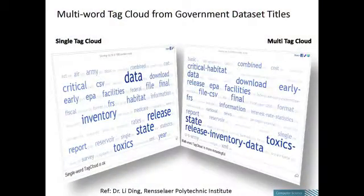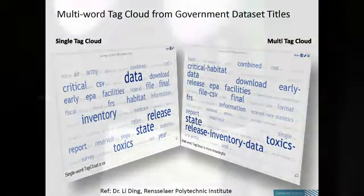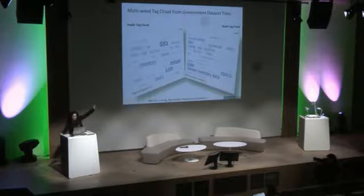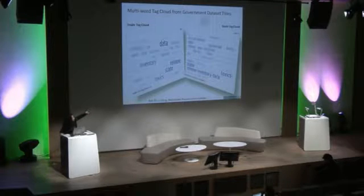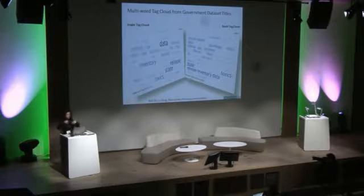Another application: a researcher from Rensselaer Polytechnic Institute used the Web Ngram service to produce multi-tag clouds. He applied it to a dataset from data.gov, trying to figure out what the titles were about. With single-tag clouds you can see it's talking about data, inventory, release, state — okay, that's something. But when you start combining and using Ngrams with multi-tag clouds, you can see it's actually talking about 'critical habitat' — providing more context. The innovation here is really about how fast this was — agile experimentation.